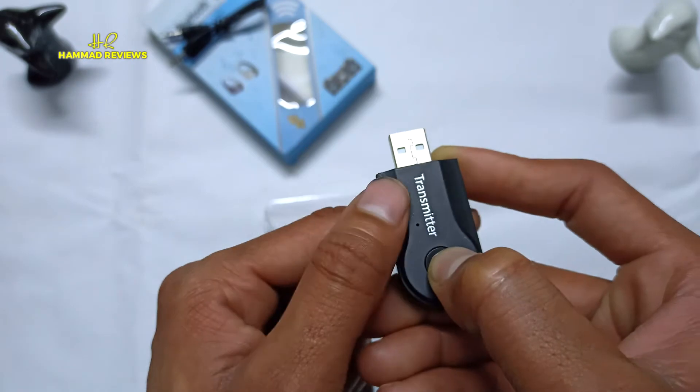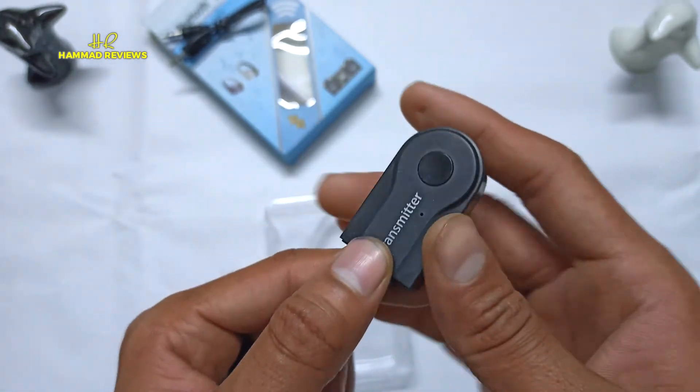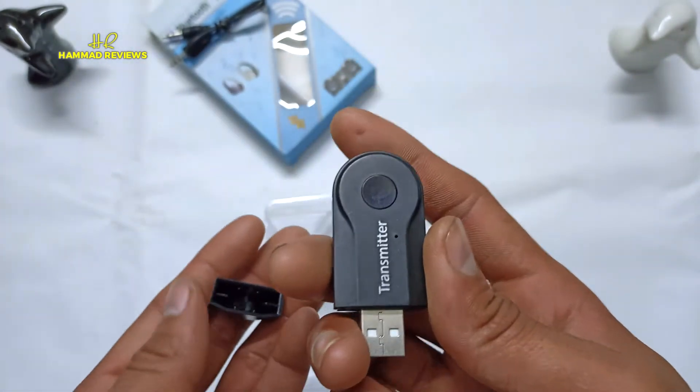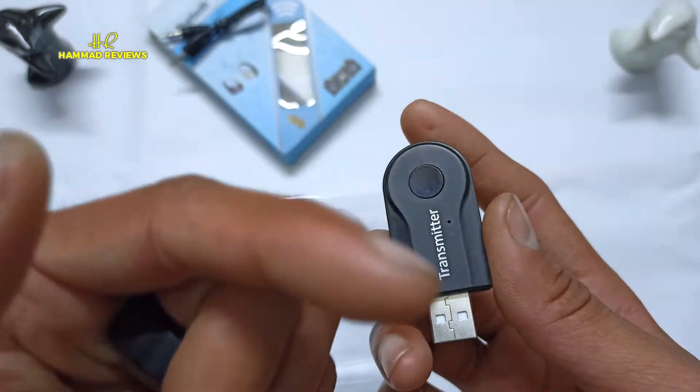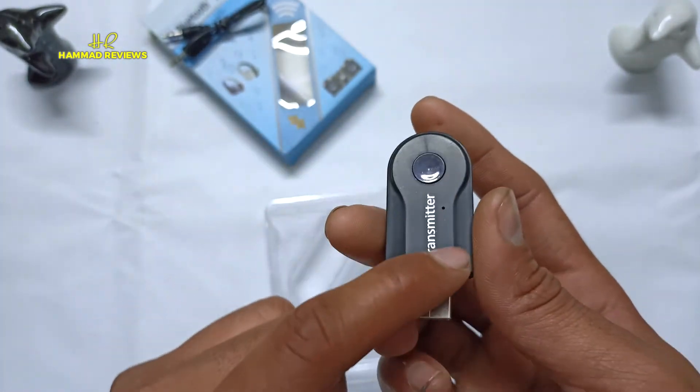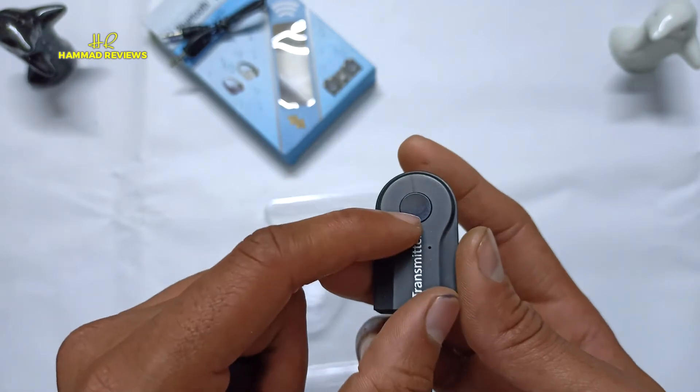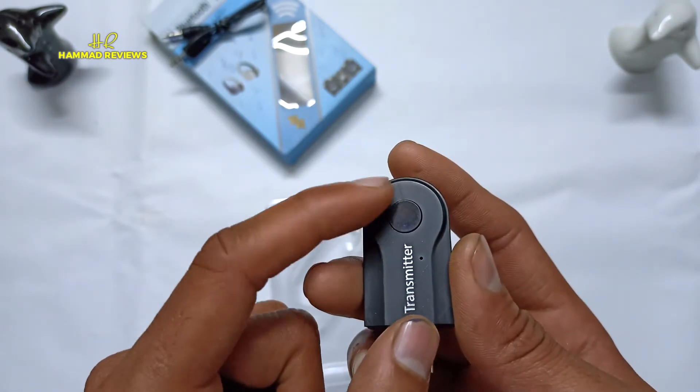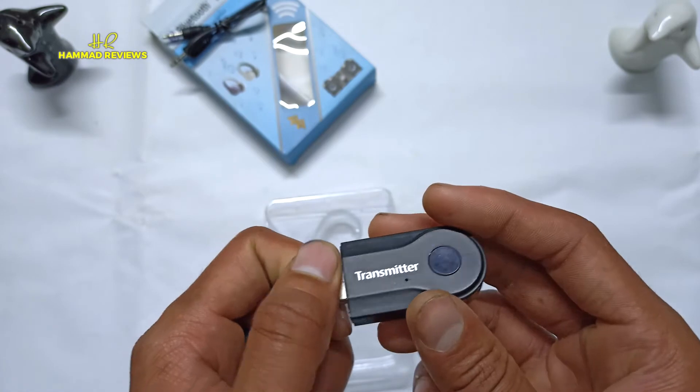This will turn on when you connect it to the car or mobile device. The Bluetooth transmitter will be powered on.